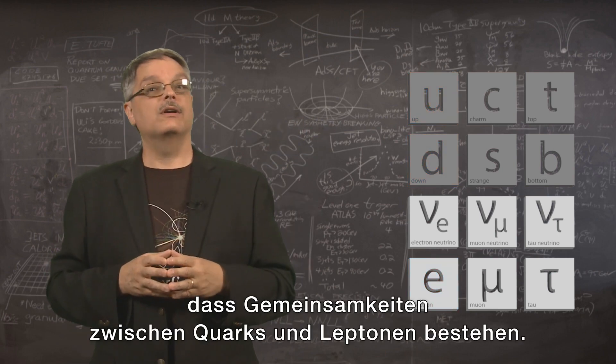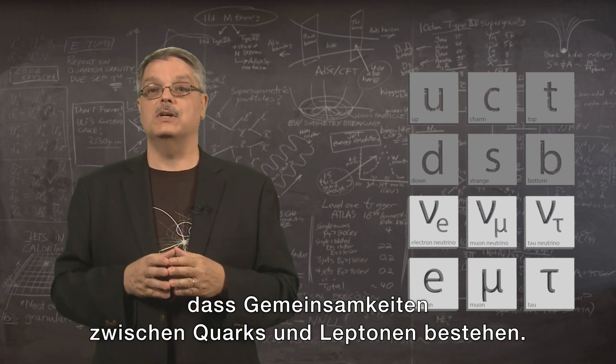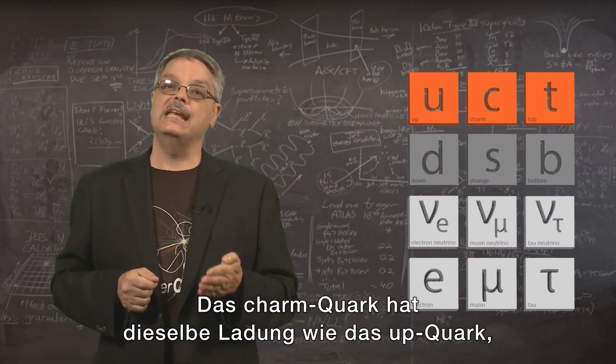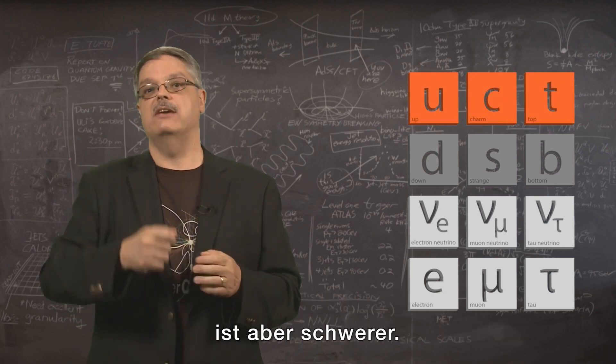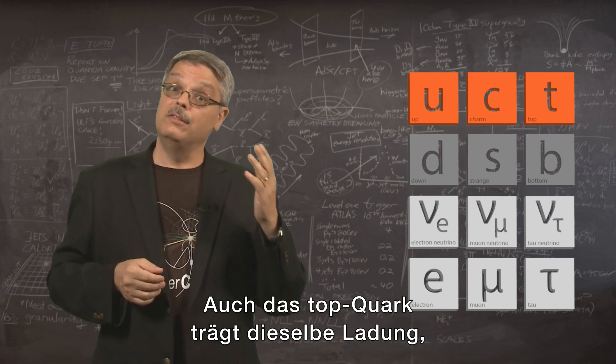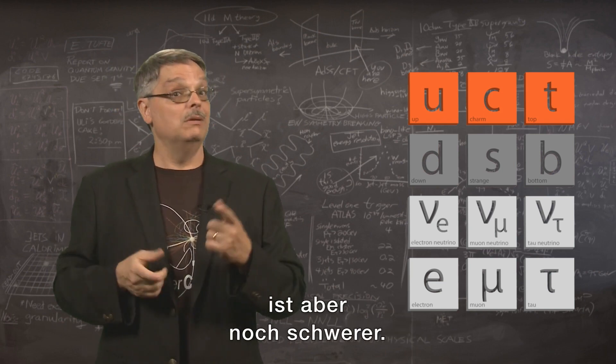It turns out that there are commonalities in the quarks and leptons. The charm quark has the same charge as the up quark, but it's heavier. Similarly, the top quark has the same charge, but it's heavier still.